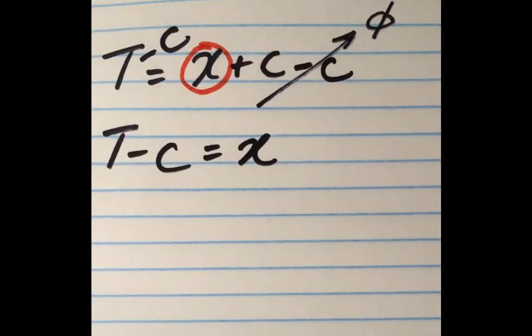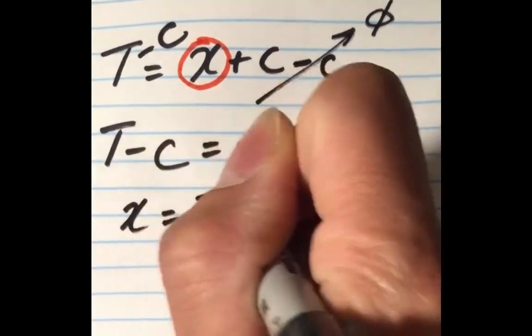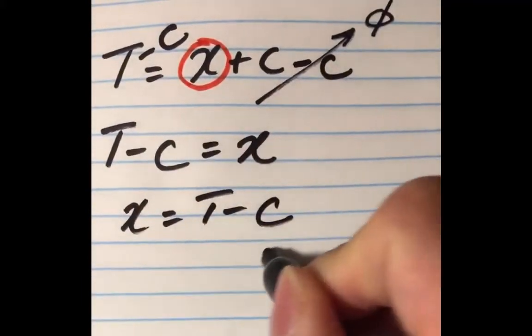It can be rewritten so that the left-hand side is the right-hand side and the right-hand side is the left-hand side. x equals t minus c. And that's our final answer.